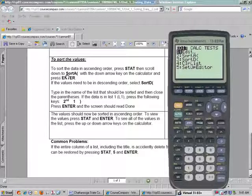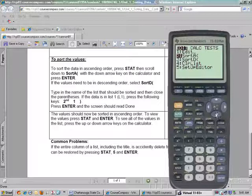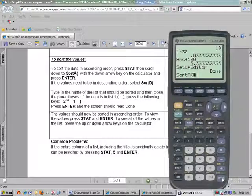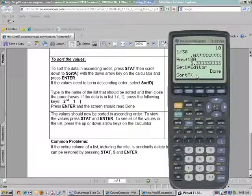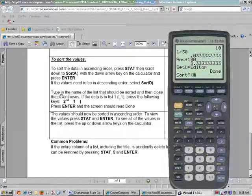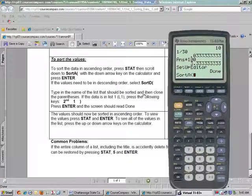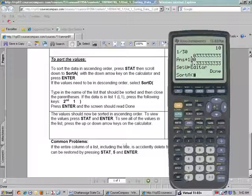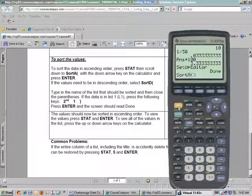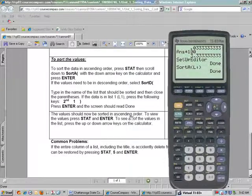Notice it says we can scroll down to Sort A if you want to move your arrow key down, and then press enter. What happens is the cursor starts flashing. Now you have to tell it which list your values are going to be in. So notice in my instructions, type in the name of the list that should be sorted and then close the parentheses. If the data is in list one, which that's where we placed ours, press the following keys. I want you to notice above the number 1 it says L1, but the keys will be 2nd and the number 1, and then close the parentheses. Press enter and it should say done.